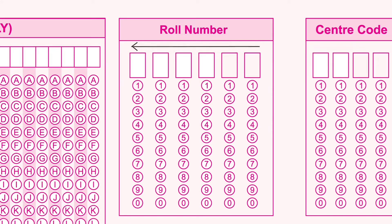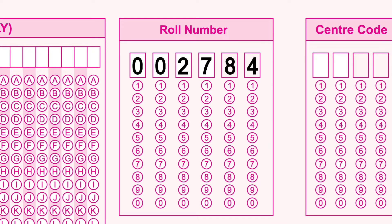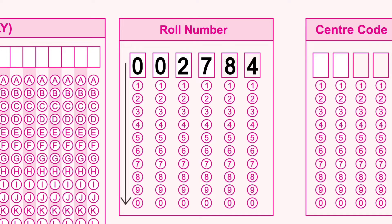If you have a roll number, you fill in 002784 into the roll number section. The roll number is 002784 — fill each digit into its respective box.